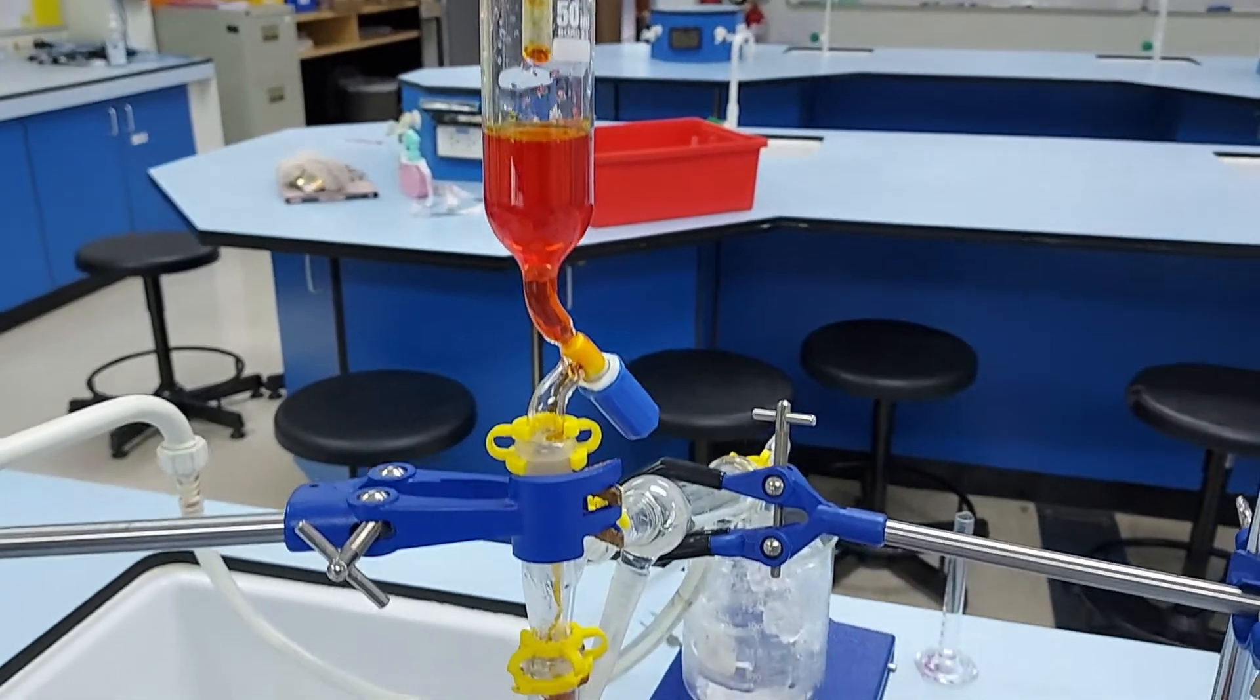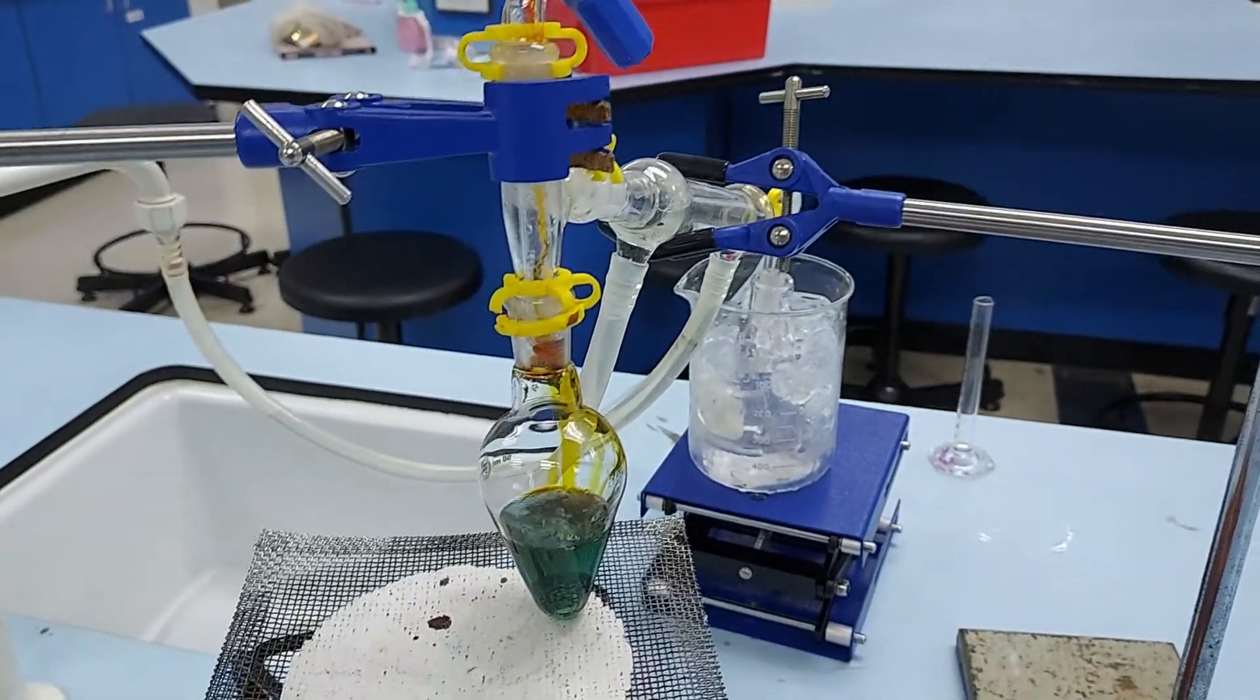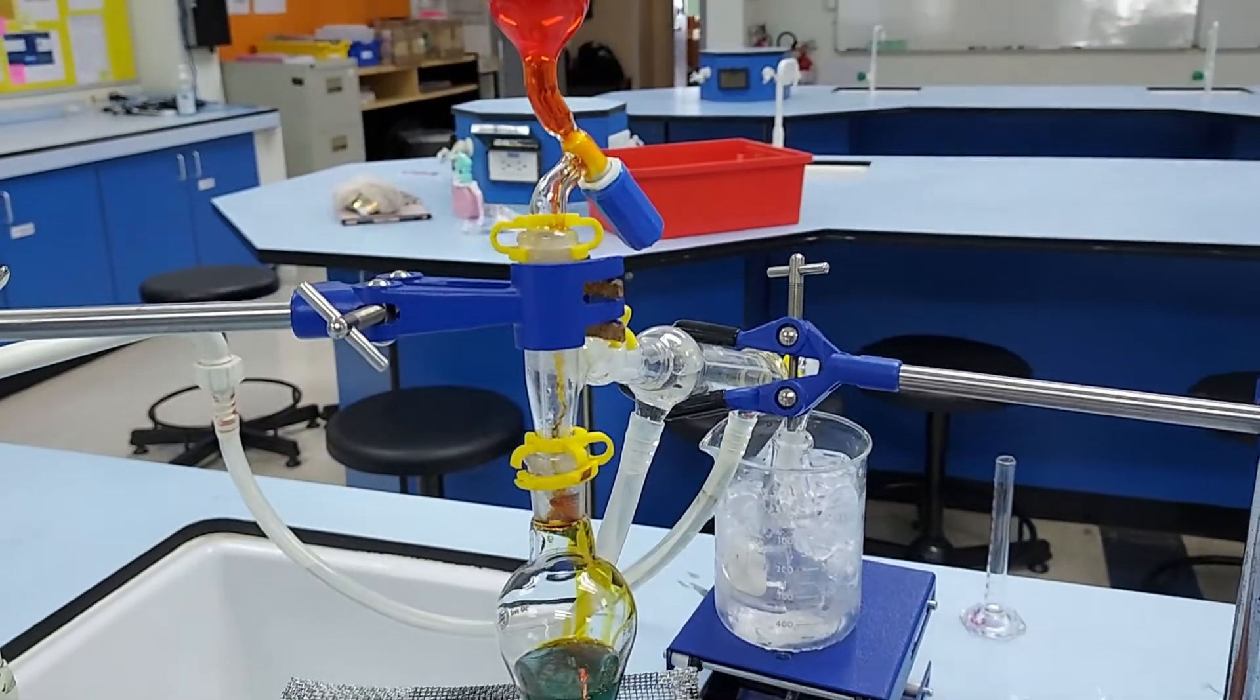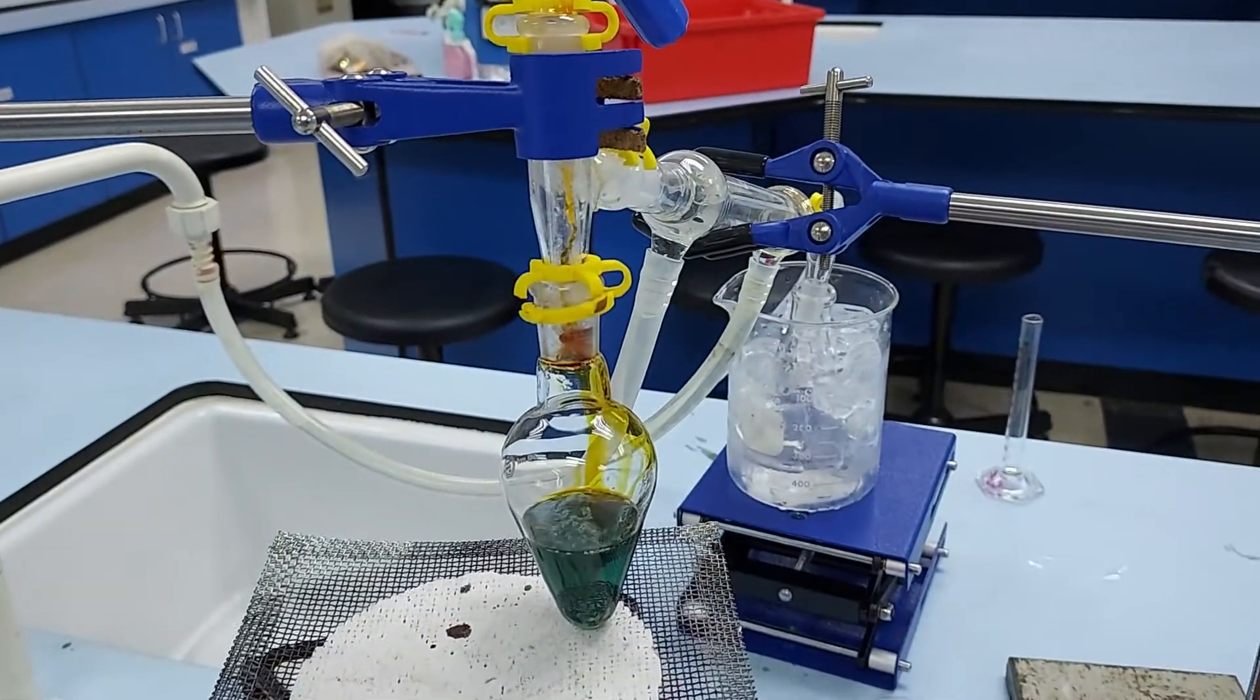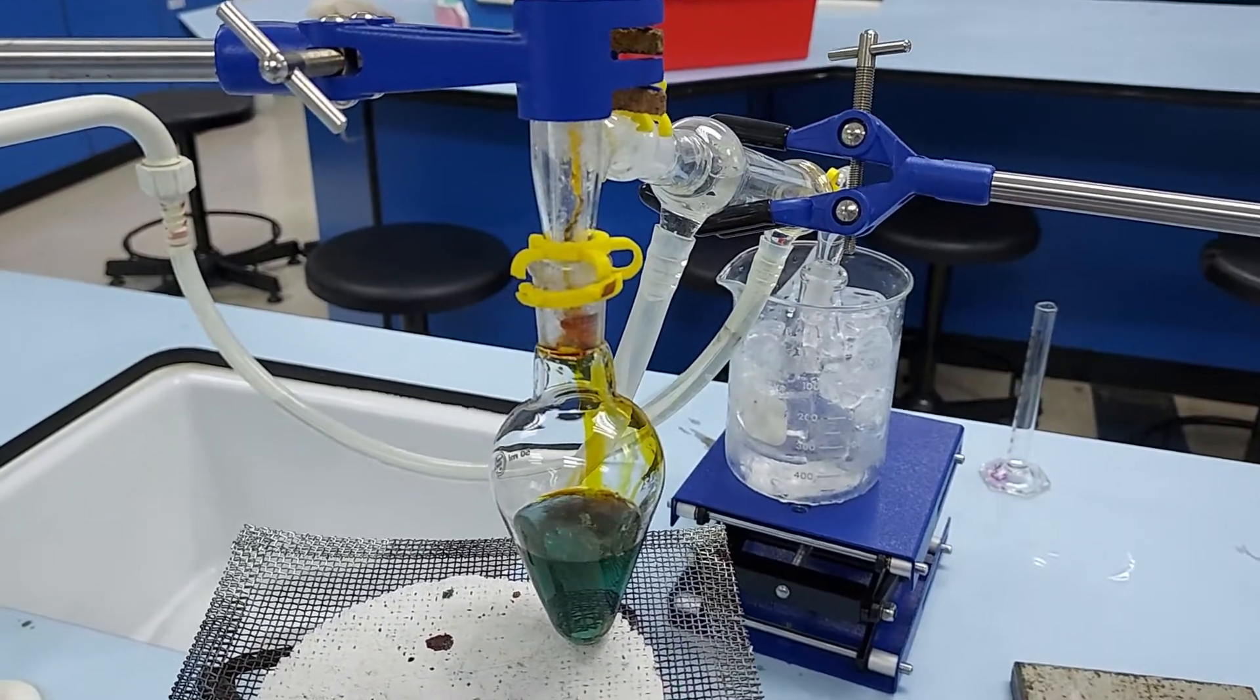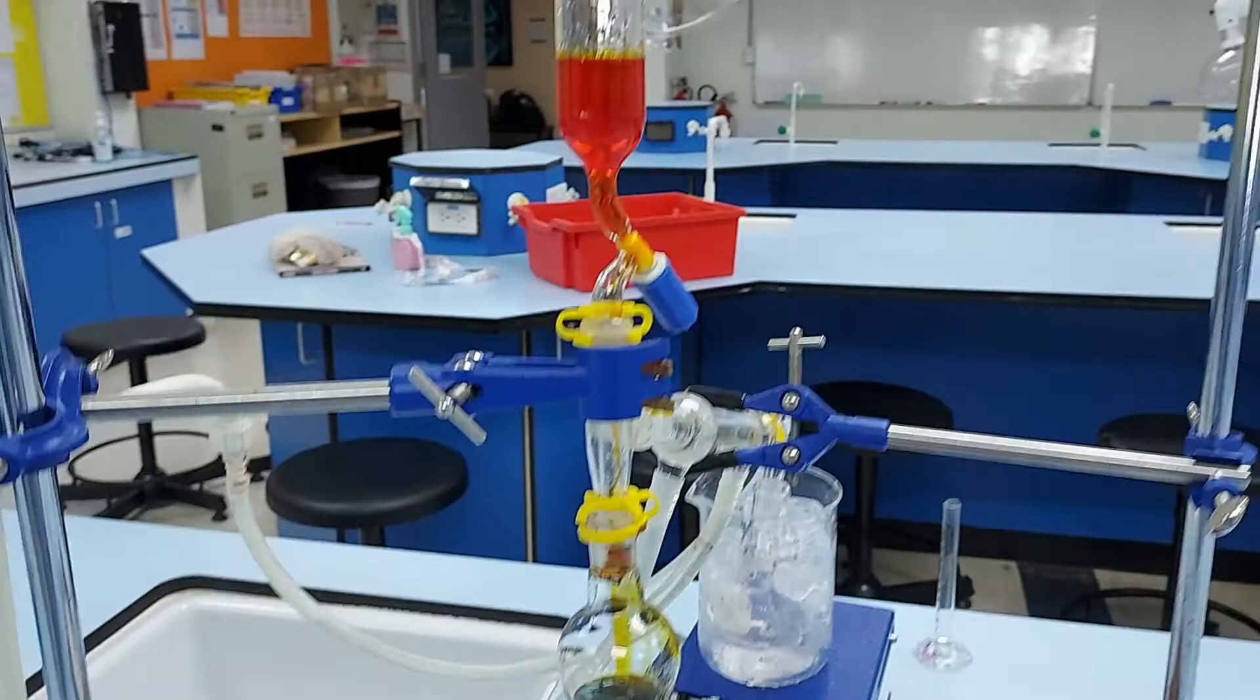We can see here the reaction mixture is being slowly dripped into the flask and look at the colour change. Now we know the alcohol has been oxidised because our chromium has been reduced from plus 6 to plus 3. Look at that beautiful green colour as opposed to the orange.